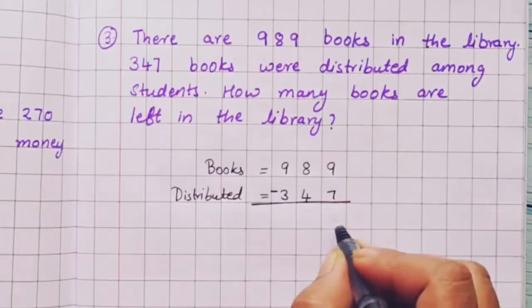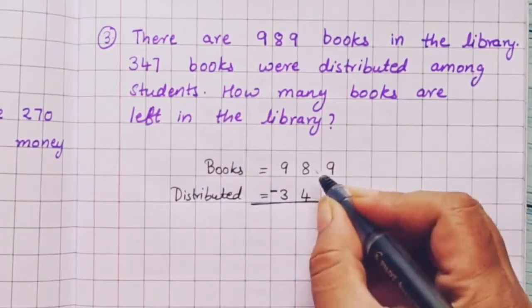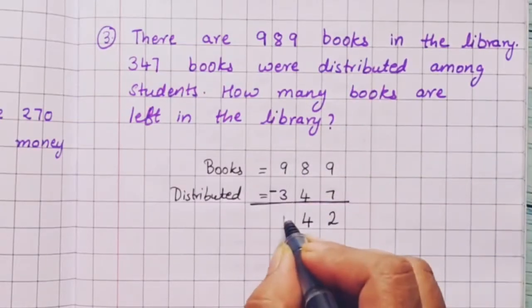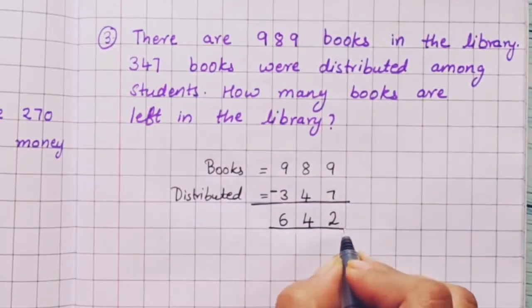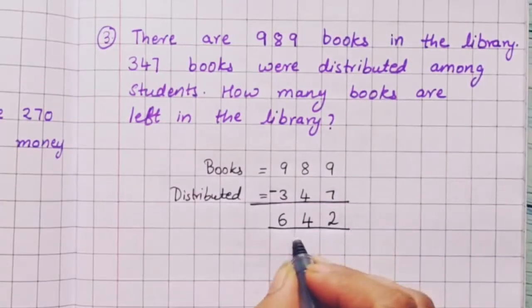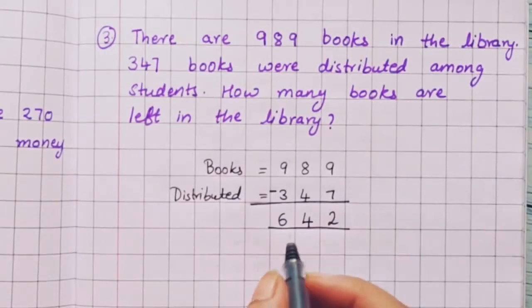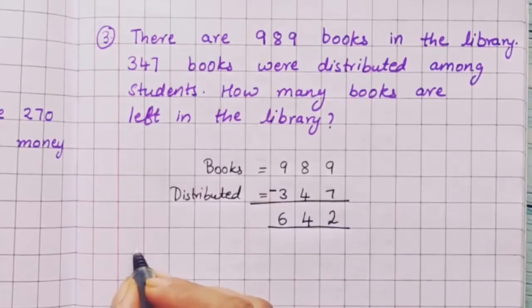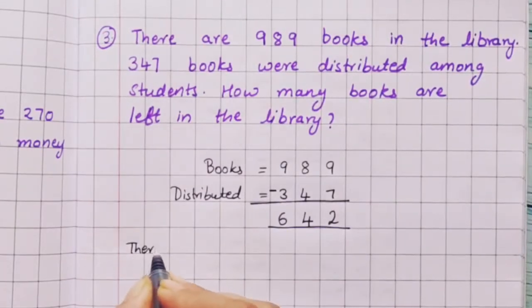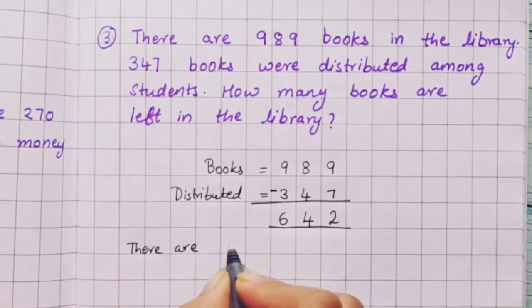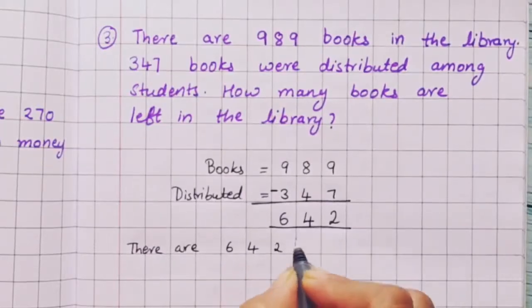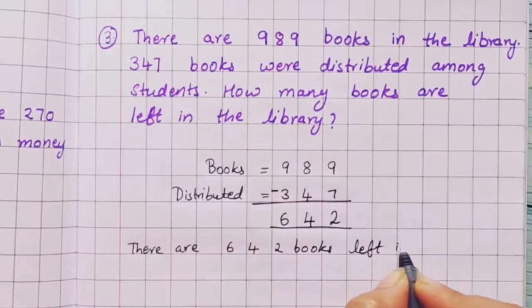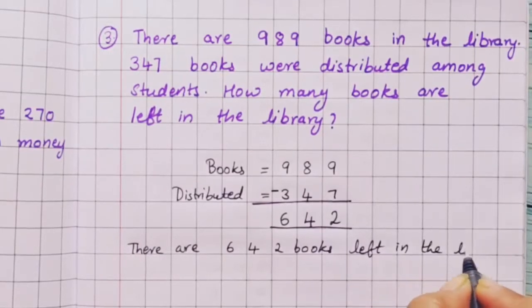Now 9 minus 7 is 2, 8 minus 4 is 4, and 9 minus 3 is 6. So how many books are left in the library? There are 642 books left in the library.